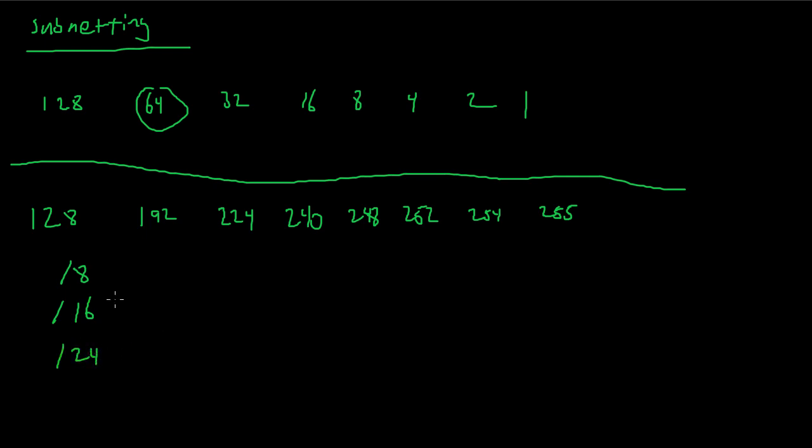The reason these are easy is because they are in multiples of 8: 8 bits, 16 bits, 24 bits. The 8-bit one was simply 255 in the first part followed by zeros. The slash 16 was 255 in the first two parts followed by two zeros. And then slash 24 was 255 in the first three parts followed by a zero. Easy stuff, right?